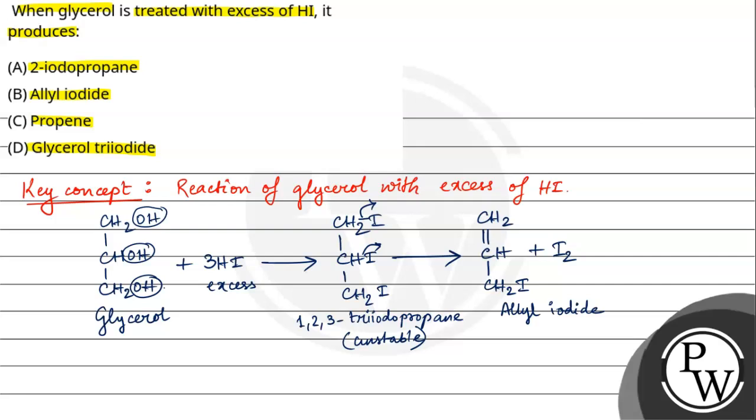Then, Allyl Iodide will react with HI. Allyl Iodide will be added to HI. And after this product, this will be CH3. Here will be Hydrogen, and here will be Iodine. So, here will be CH3, CHI, CH2I.